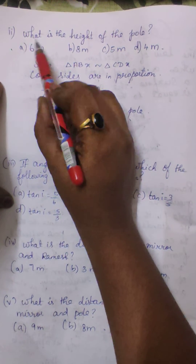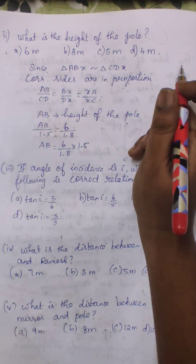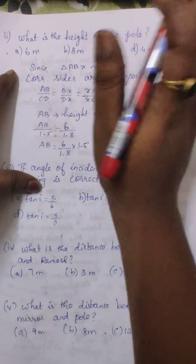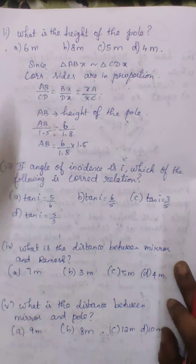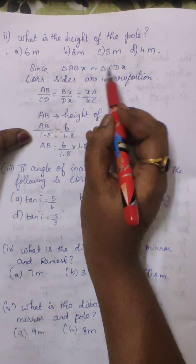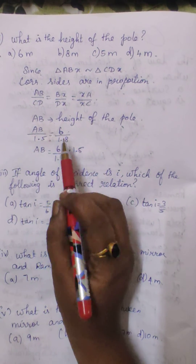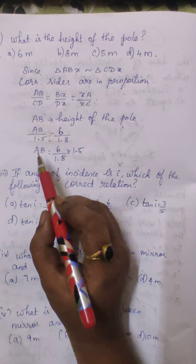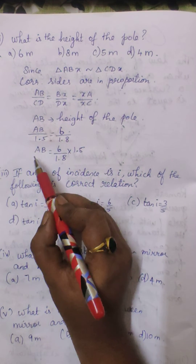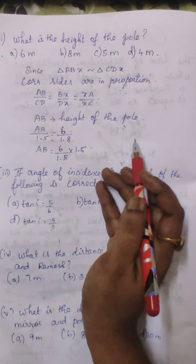In the second question, they are asking for the height of the pole. A, B represents the height of the pole — the traffic light. Since triangles A, B, X and C, D, X are similar, corresponding sides are in proportion. So A, B divided by C, D equals B, X divided by D, X equals X, A divided by X, C. A, B is what we require. C, D is 1.5, B, X is 6, and D, X is 1.8. So A, B equals 6 divided by 1.8, then transposing to get the answer.